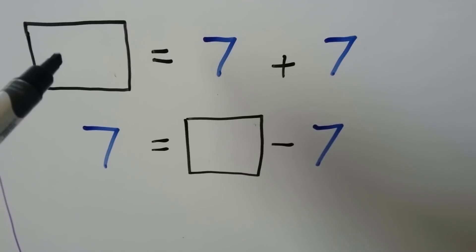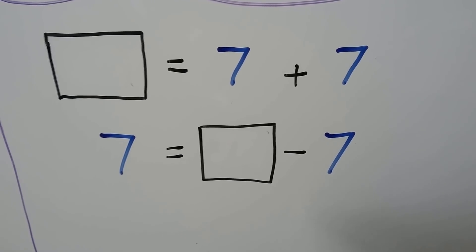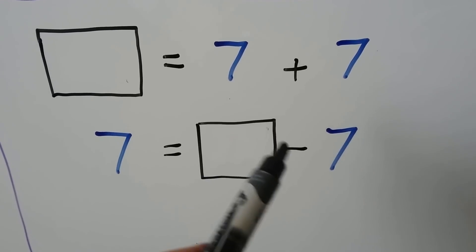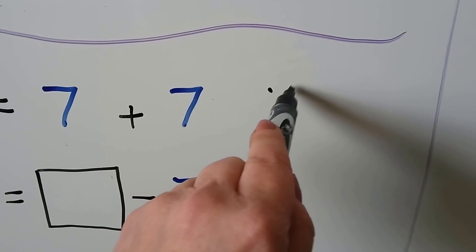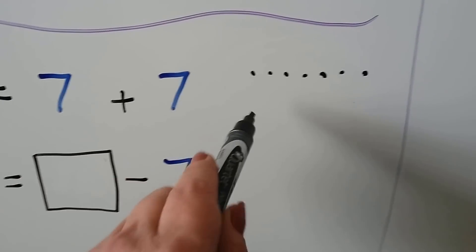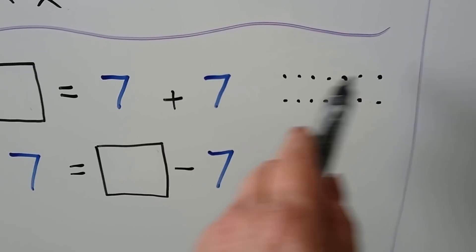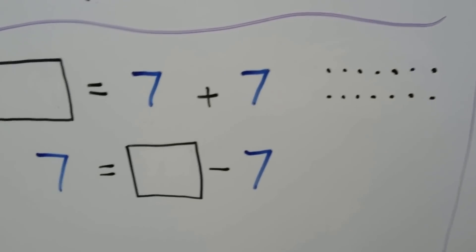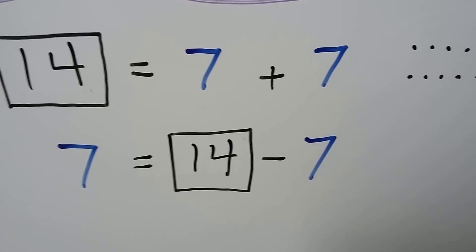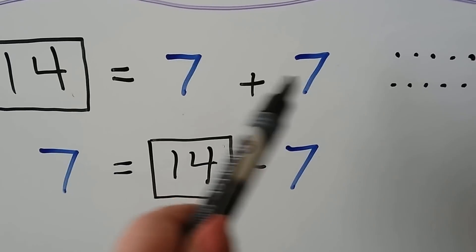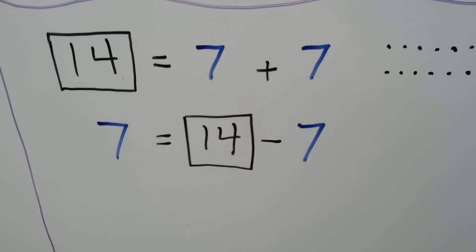Here we have a doubles problem. We need to find the sum — the unknown number — equal to 7 plus 7. We can also say that 7 equals that unknown number minus 7. We make 7 dots, then 7 more dots — altogether that's 7, 8, 9, 10, 11, 12, 13, 14. So 7 plus 7 equals 14, and 7 equals 14 minus 7. Since it's doubles, two of the numbers are the same: 7, 7, and 14 are the numbers in our related facts.